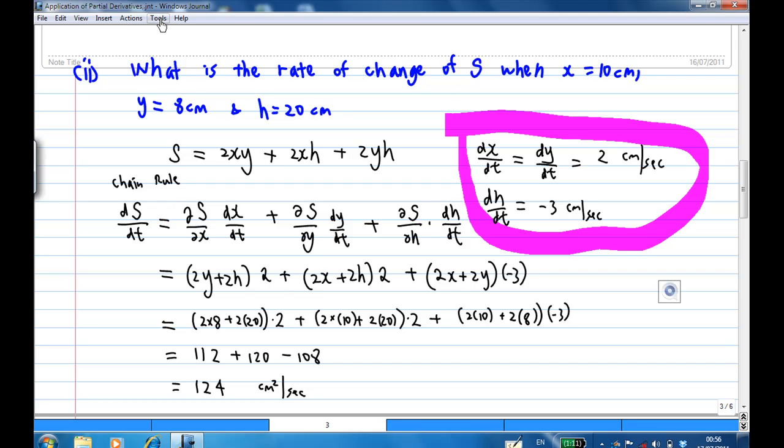Using the chain rule of partial derivative. Using the chain rule of partial derivative, I know that dS/dt is ∂S/∂x dx/dt plus ∂S/∂y dy/dt plus ∂S/∂h dh/dt.